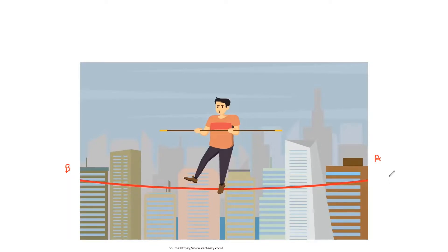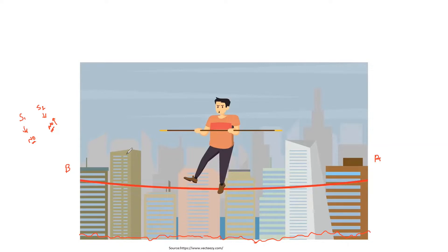Now imagine the same example, but this time there's a safety net at the bottom. Even if anything goes wrong, the net has your back. The intensity of saying 'no' to this task is comparatively less in scenario two. If everything goes fine, there's no need for the net — but if anything goes wrong, that's where the safety net comes into play and you'll be safe.